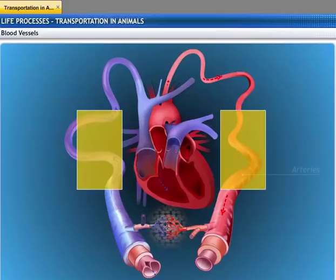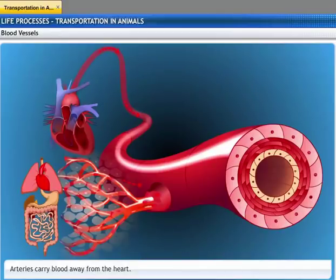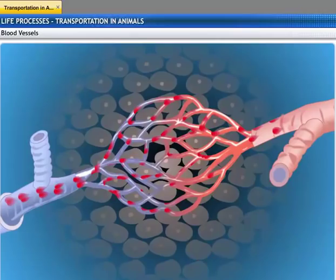Blood vessels are comprised of arteries and veins. Arteries are the blood vessels which carry oxygenated blood away from the heart to various organs in the body. When the blood flows out from the heart, it is at high pressure. To withstand this pressure while transporting the blood, the walls of the arteries are thick and elastic. On reaching an organ or tissue, the artery divides into smaller vessels so that the blood can reach each individual cell.